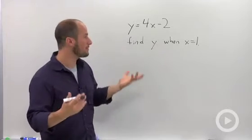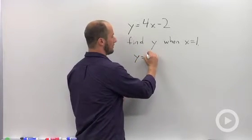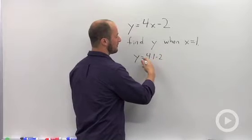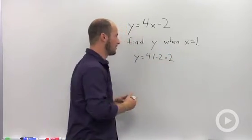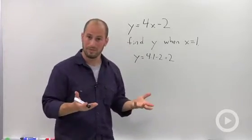We just plug in 1, solve it out. So y is equal to 4 times 1 minus 2, 4 times 1 is 4, minus 2 is equal to 2. So when x is 1, y is 2. Pretty straightforward.